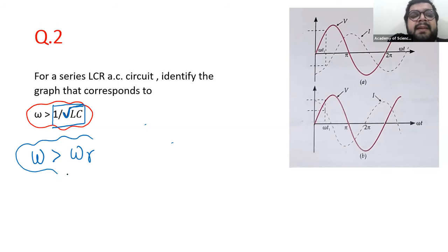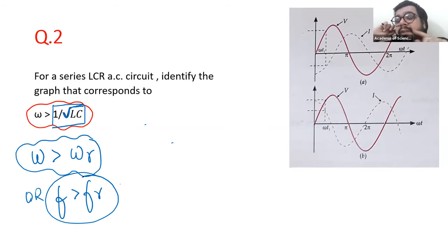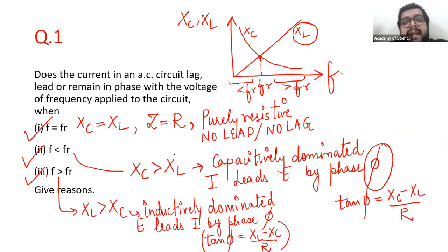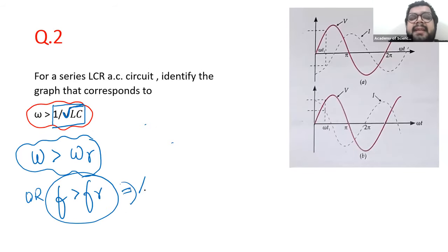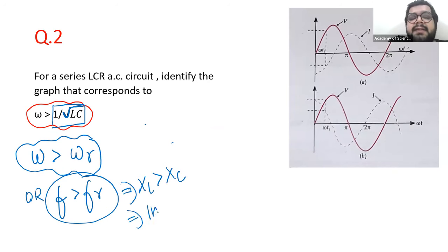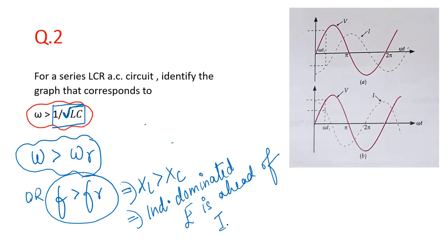When ω is bigger than ωR, the frequency is bigger than the resonant frequency. Going back to the previous question — when F is bigger than FR, the circuit is inductively dominated: XL is bigger than XC. In an inductively dominated circuit, E is ahead of I.